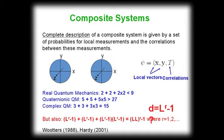One important ingredient that can help you to narrow these theories is the way how you combine systems to composite systems. It requires that complete description of a composite system is given by a set of probabilities for local measurements for individual systems and the correlations between these measurements. In general terms you have local tensors associated to the first particle, to the second particle, and the correlation tensor that takes care about all possible correlations between these local measurements.